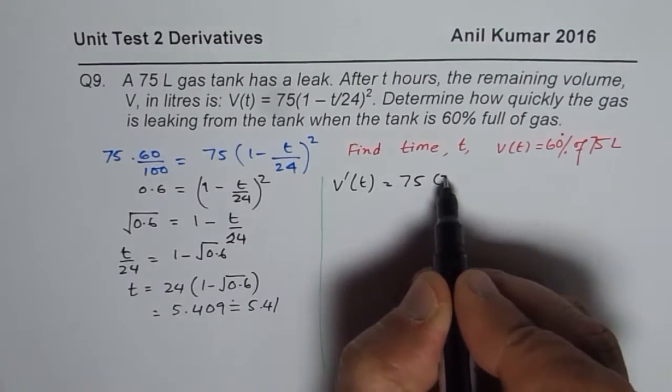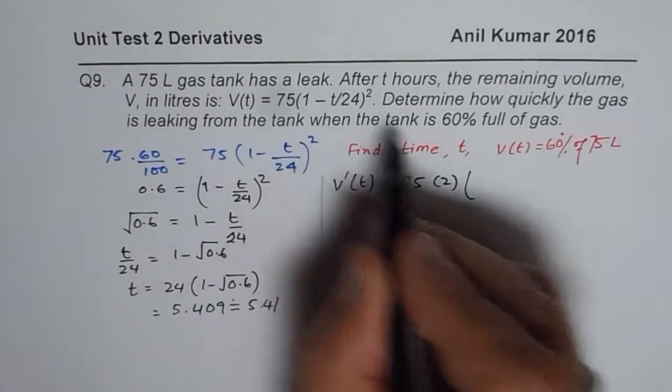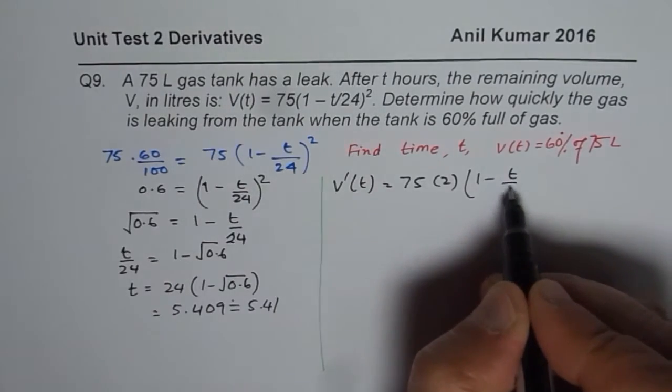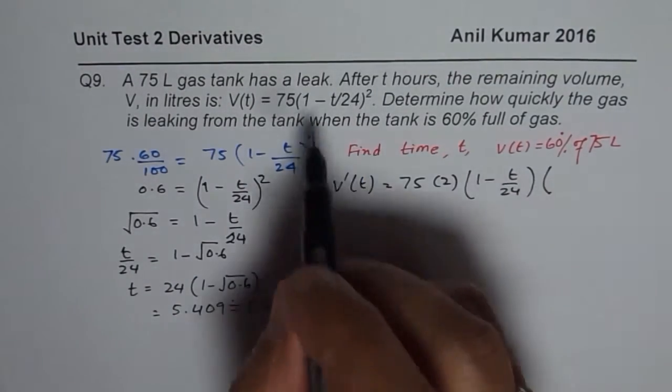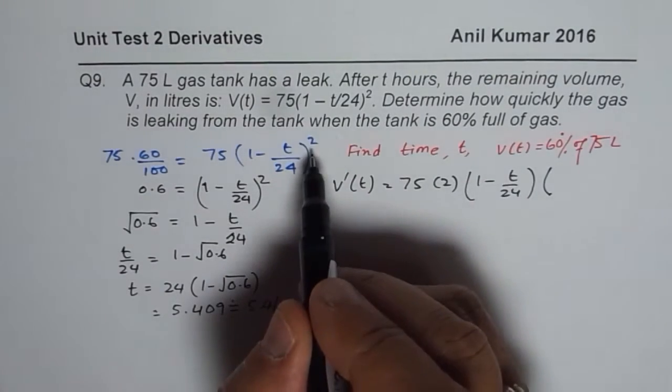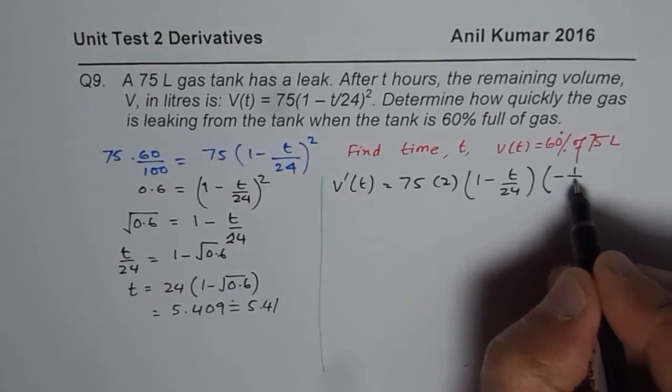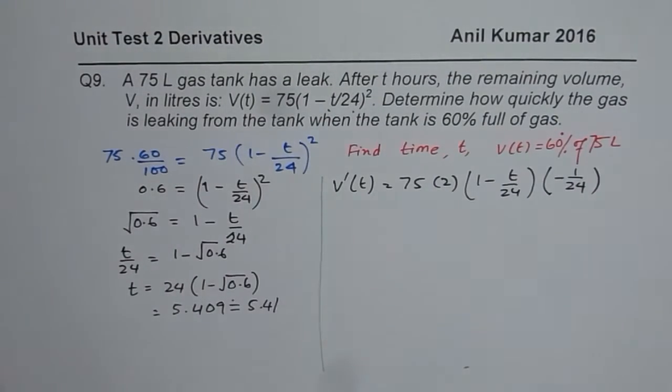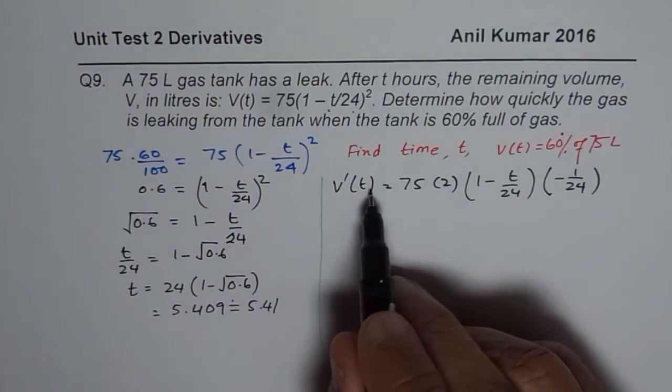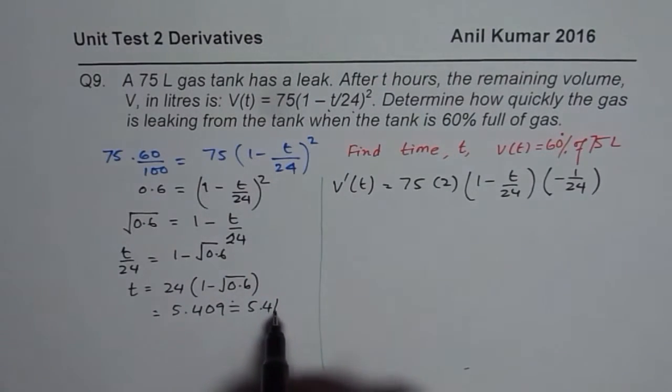you get 75 times 2, that is 2 times 1 minus T over 24 to the power of 1, times minus 1 over 24. So that is the derivative of minus T over 24. So that becomes the derivative of this particular function.